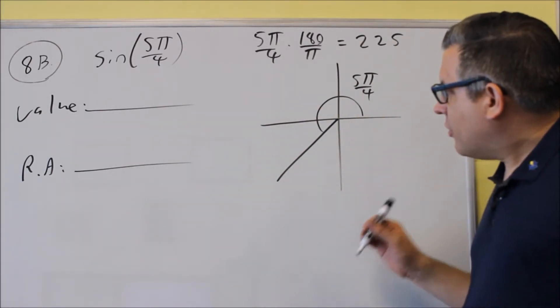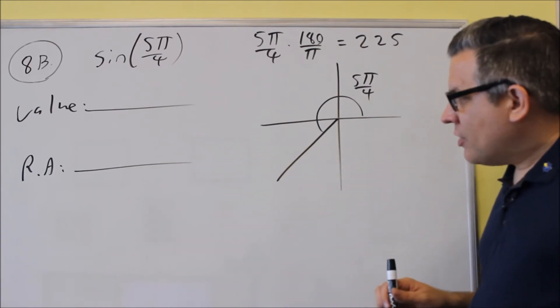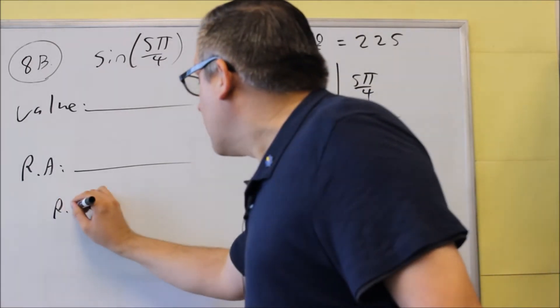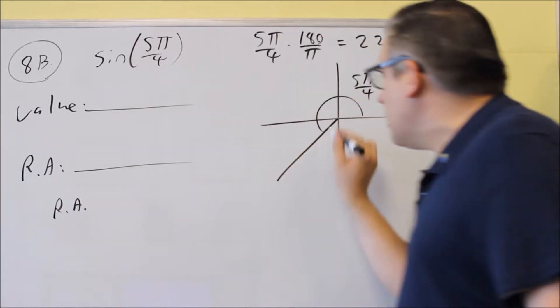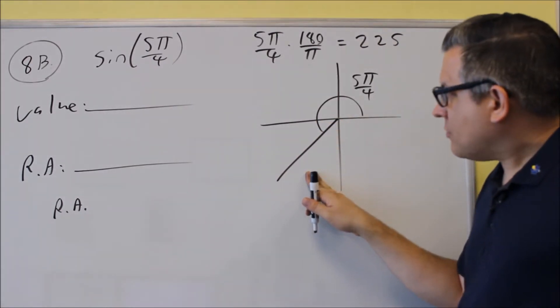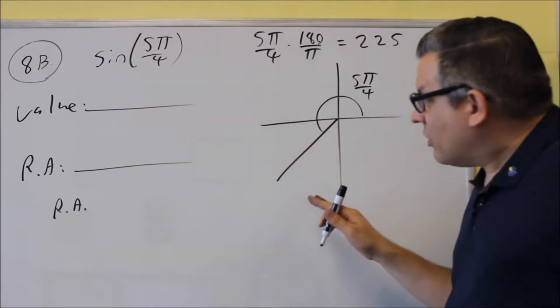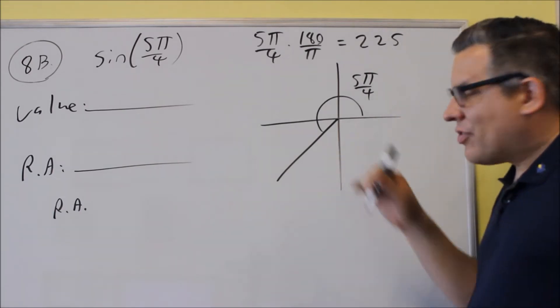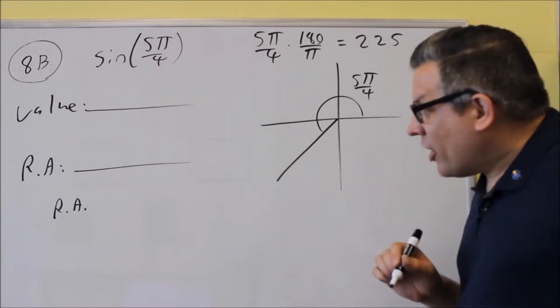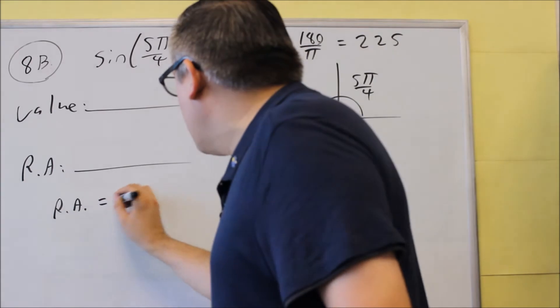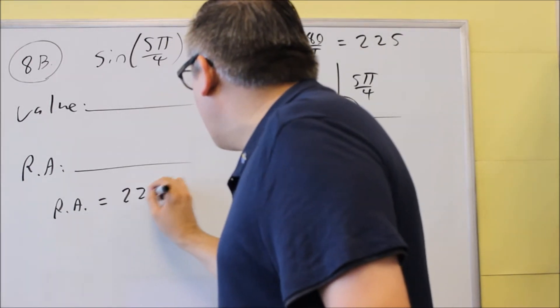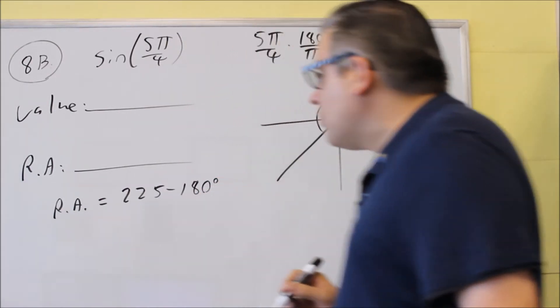Okay, so we want to find the reference angle. So we'll start that over here, reference angle. Because it's in the second quadrant, that means that we want to use the formula θ minus 180. So we're going to do θ, which is 225, minus 180.